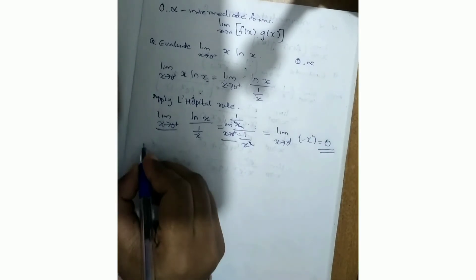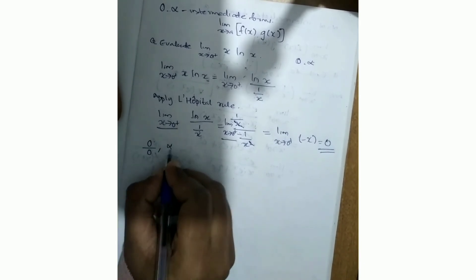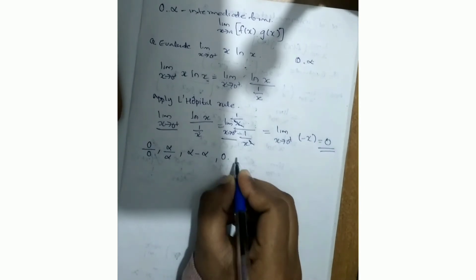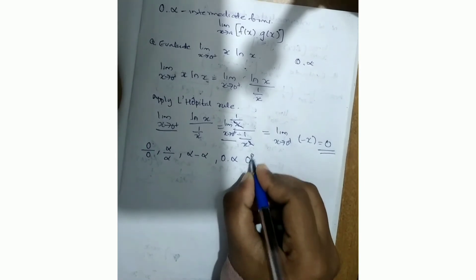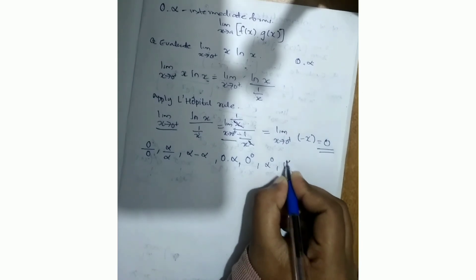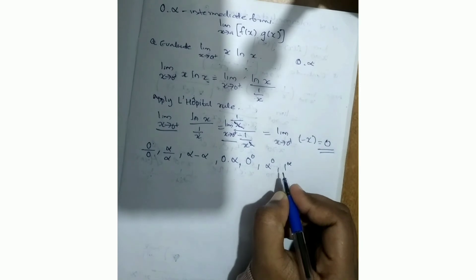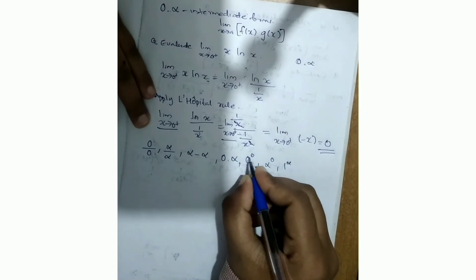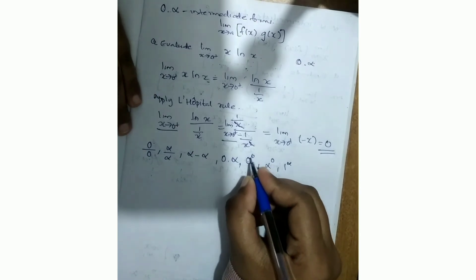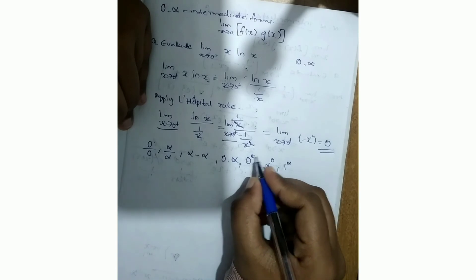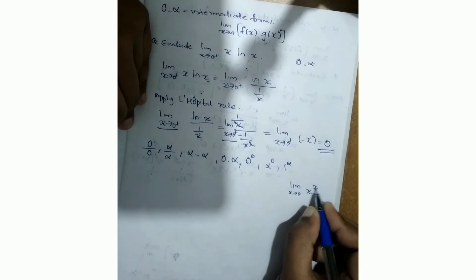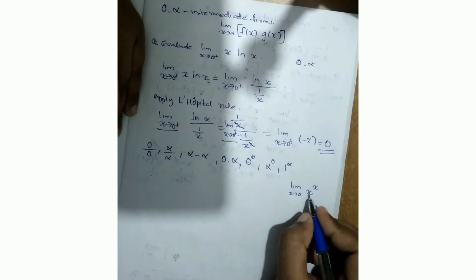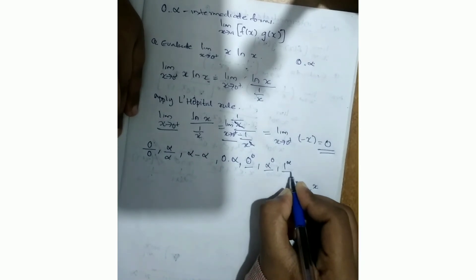Now we have covered four indeterminate forms: 0 by 0, infinity by infinity, infinity minus infinity, and 0 into infinity. The next three forms we will learn are: 0 raised to 0, infinity raised to 0, and 1 raised to infinity.